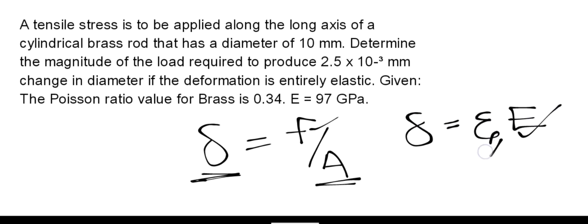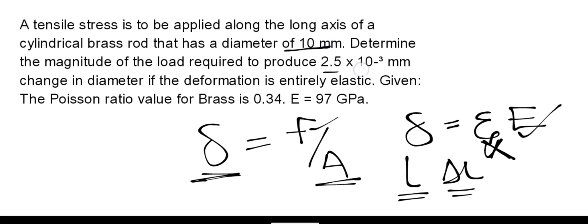However, we only have the Young's modulus — we don't have the strain. We have no values to find the strain directly, such as the length and change in length, because what we are given in the question are values for the diameter. That is where Poisson's ratio comes in.